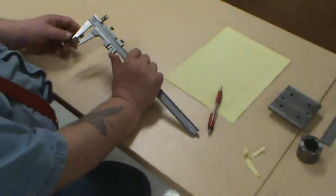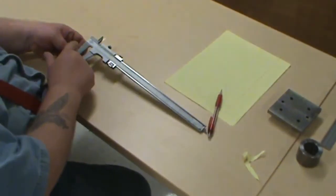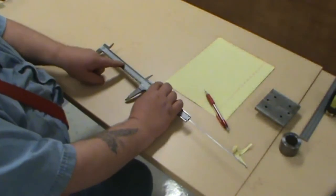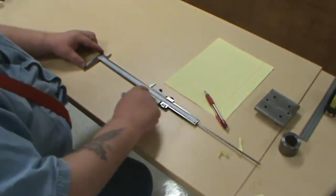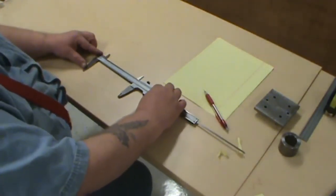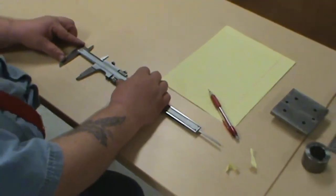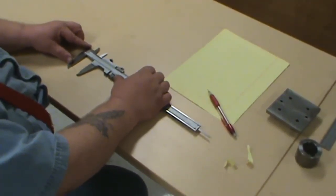The first thing you'll notice with the caliper is that we have the beam. This is the part that does not slide, this is the beam. We now have the sliding jaw, and I'm going to get it up here, the part that moves, that's our sliding jaw.